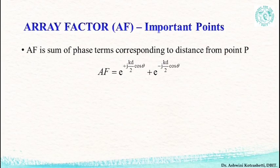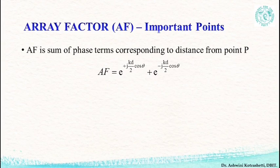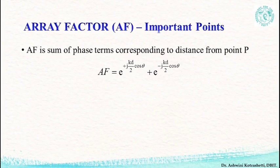There are a few important points regarding the array factor to bear in mind. First of all, the array factor results purely from summing the phase terms corresponding to the distances involved in the array. For this specific example, you see that the array factor is equal to e raised to plus j(kd/2 cos(theta)) plus e raised to minus j(kd/2 cos(theta)), which is the addition of the phase terms with respect to the two Hertzian dipoles.